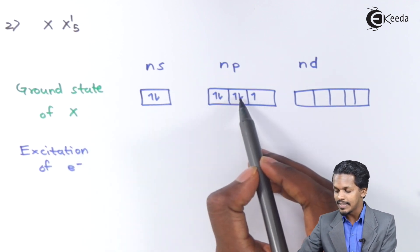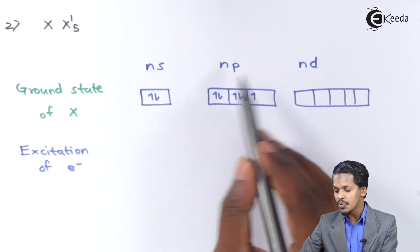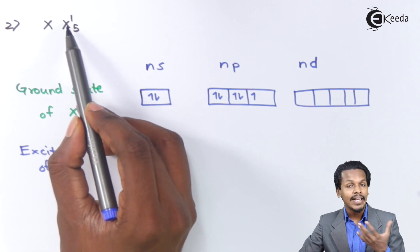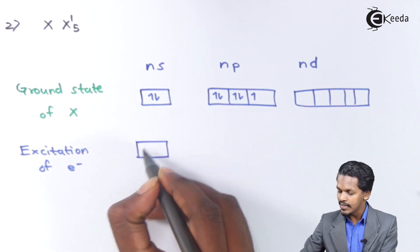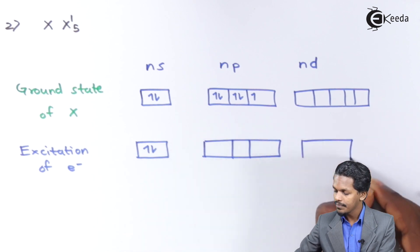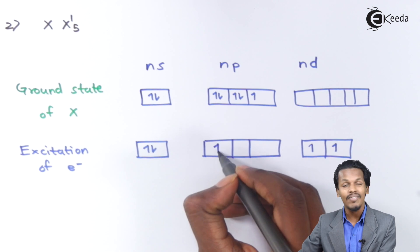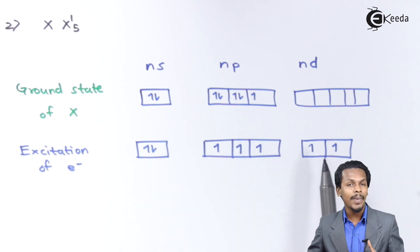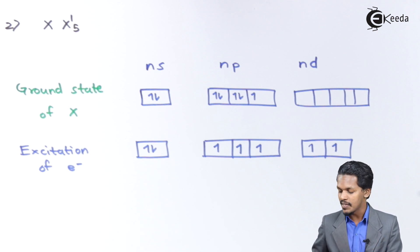On excitation, one paired electron shifts to the d orbital giving 3 unpaired electrons. Shifting another electron to d gives 5 unpaired electrons in total — 1, 2, 3, 4, 5. These 5 unpaired electrons accommodate the 5 X' atoms, and the central atom undergoes hybridization.